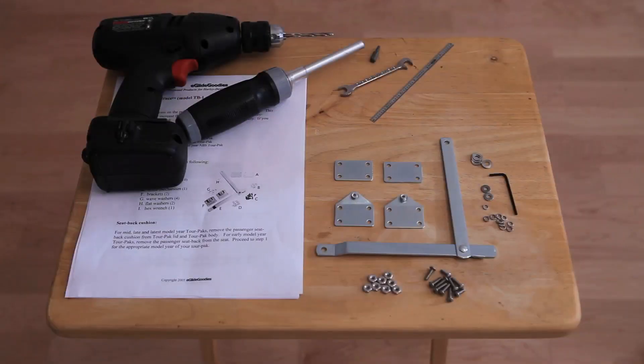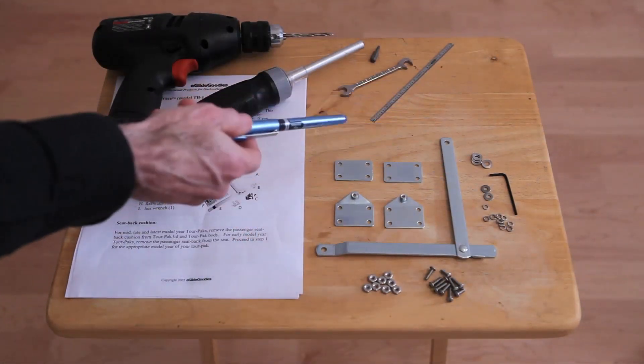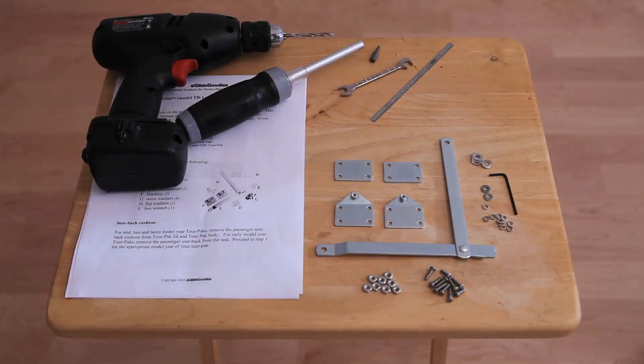Today we're going to be installing E-Glide Goodies Ultra Brace for TorPaks, which includes the brace arm mechanism, brackets, back plates, install hardware, and installation instructions.